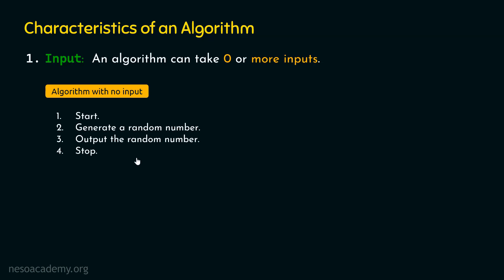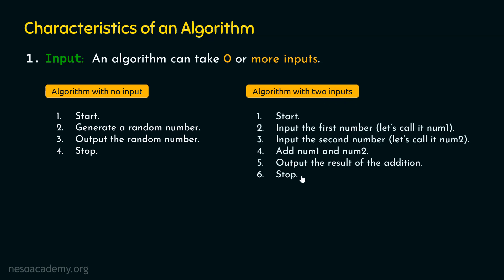Now let's discuss an example algorithm with more than one input — precisely two inputs. This algorithm generates the result of addition of two numbers, num1 and num2, received from the user. In step two, we ask the user to input the first number, calling it num1. In step three, we ask for the second number, num2. Then we add num1 and num2 and output the result. This is an example algorithm with two inputs.